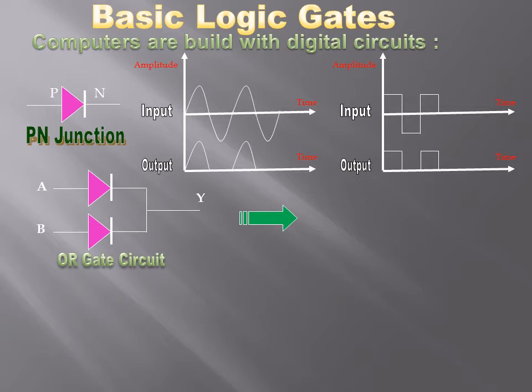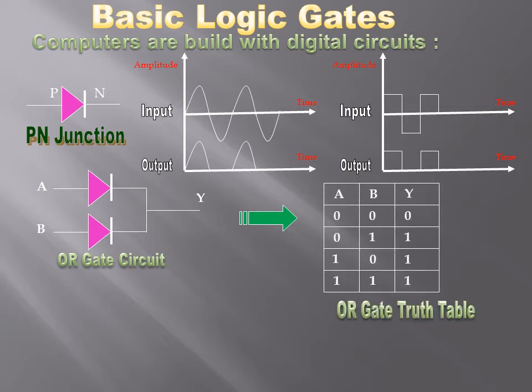When we give positive voltage at any of the inputs, we get positive voltage at the output. It is only when both inputs are not given positive voltage that the output will be 0. Looking at the truth table of this circuit, which we call the OR gate: when both inputs are 0, the output will be 0.